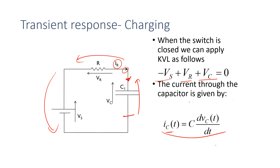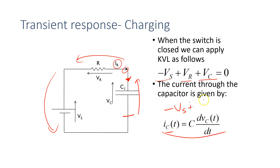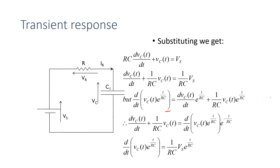Rewriting the equation: the voltage across the resistor is I·R, and I equals C·dVc/dt, so we get RC·dVc/dt + Vc = Vs. This gives us a first-order differential equation which we can solve. You could solve it by logs or another method — whichever works for you. You can review your differential equations; I expect you know them, so I won't go through the full derivation.